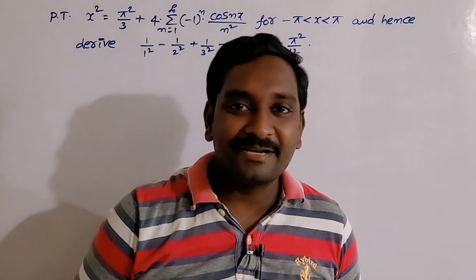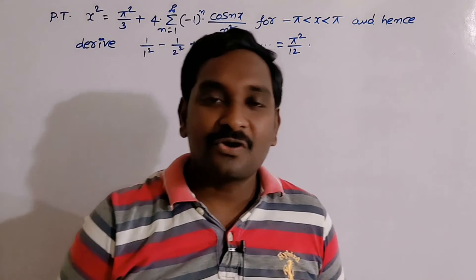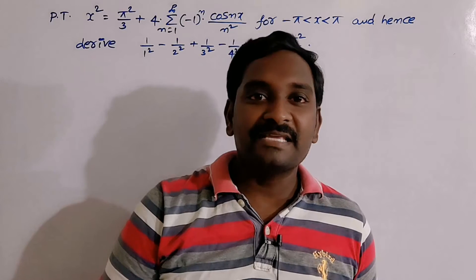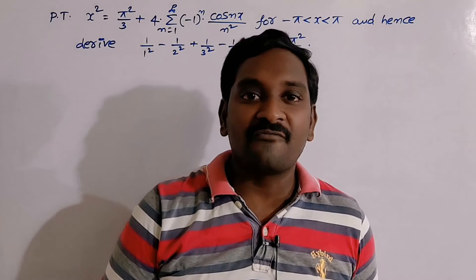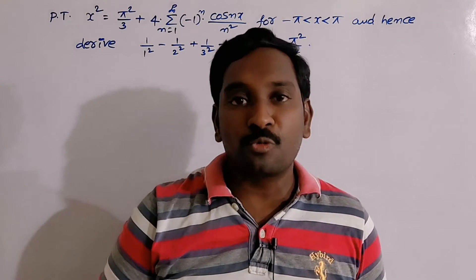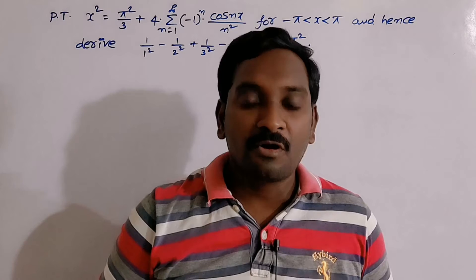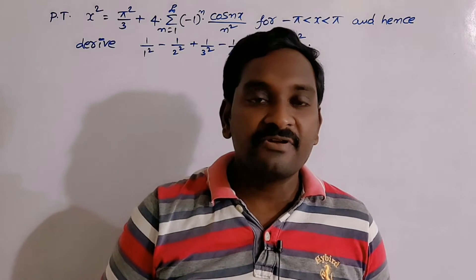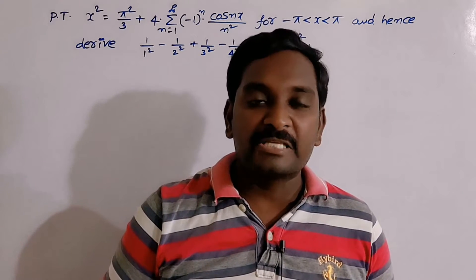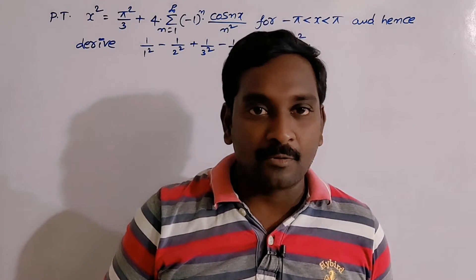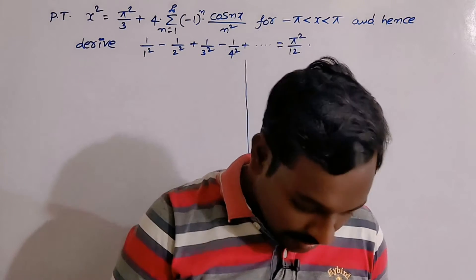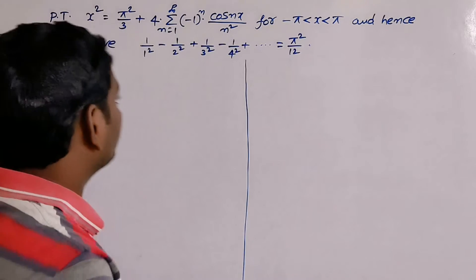Hi everyone, welcome back to our channel. So far we have been finding the Fourier series expansions of given functions on the open interval (0, 2π) only. Now onwards, the given interval is in the form of (−π, +π). Look at the example.